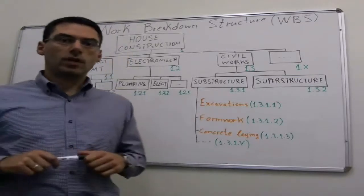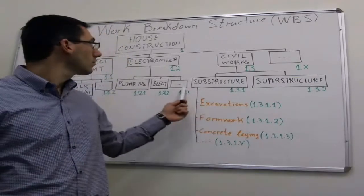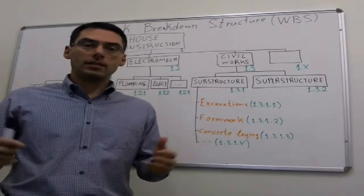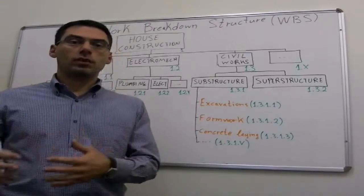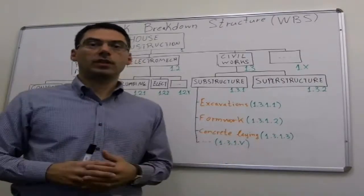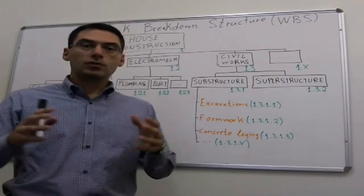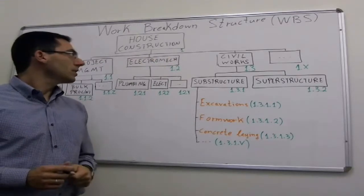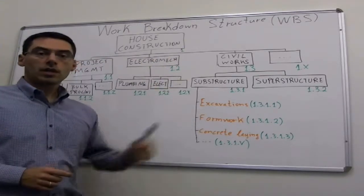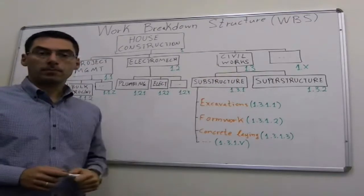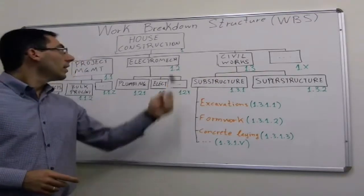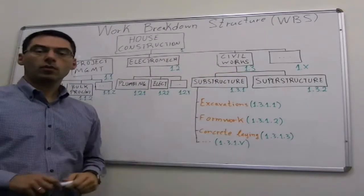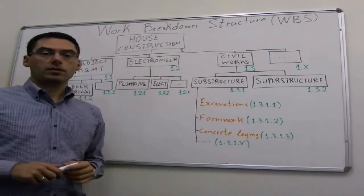In general, a work breakdown structure looks like this. What you are trying to do is analyze, break down the work that you need to do in order to deliver the product that you have been asked for in small pieces. Here we have house construction, which has a part of electromechanical works, civil works, whatever. There are levels in the work breakdown structure that analyze more and more in depth the work that needs to be done.